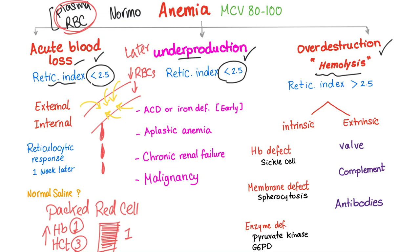Underproduction includes iron deficiency anemia or anemia of chronic disease early — the bone marrow still has enough iron, but later it becomes microcytic as the bone marrow runs out of iron. Aplastic anemia means the bone marrow is useless, causing anemia, leukopenia, and thrombocytopenia — i.e., pancytopenia. Chronic renal failure causes anemia due to decreased EPO secretion, as well as anemia of chronic disease. Malignancy can also cause it by different mechanisms.